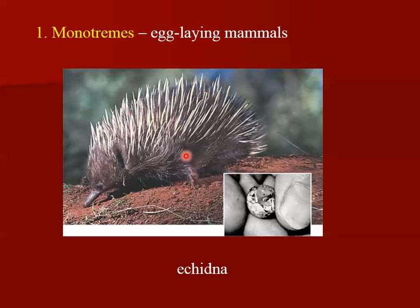There are three main lineages of mammals. Monotremes are an order of primitive mammals — they still lay eggs. If you learned in grade school that all mammals give live birth, that's not true. The monotremes still lay eggs like our reptilian-like ancestors. You only find monotremes in the Australian and New Zealand area. The echidna, or spiny anteater, is one example of a monotreme, and the duck-billed platypus is another.